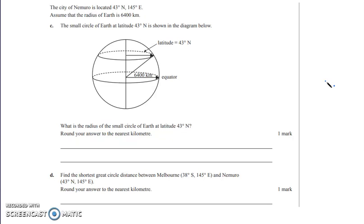So the city of Narima, Narima is located 43 degrees north and 145 degrees east. Assuming that the radius of Earth is 6,400 kilometers, the small circle of Earth at the latitude of 43 degrees north is shown in the diagram. What is the radius of this small circle of the Earth at 43 degrees north? So what we need to do is work out what this line up here, what that radius is. And we know that on this diagram, the angles of elevation, so if it's 43 degrees north, angle of elevation going up is 43, then the angle of depression down is also 43.